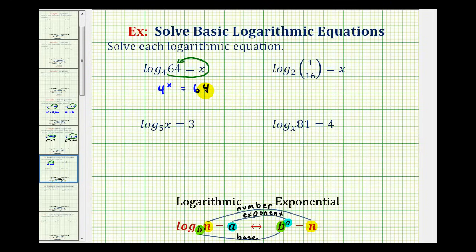And now if we can write 64 with a base of 4, we can solve for x. And since 64 is equal to 4 times 4 times 4, we can write this as 4 to the power of x equals 4 to the third.